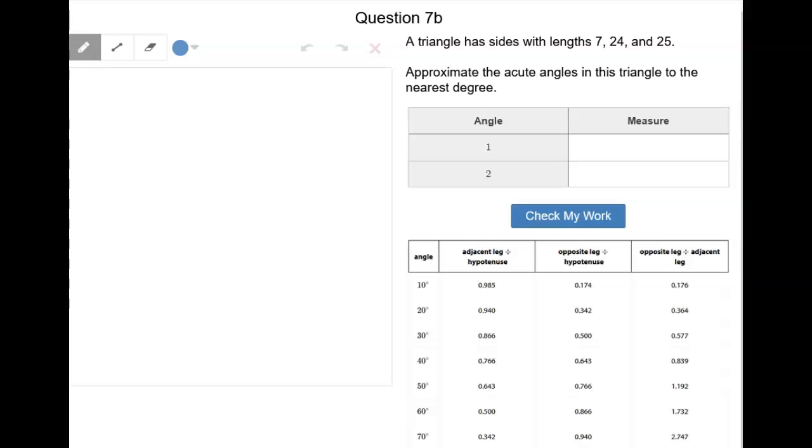Question 7b. A triangle has sides with lengths 7, 24, and 25. Approximate the acute angles in this triangle to the nearest degree.